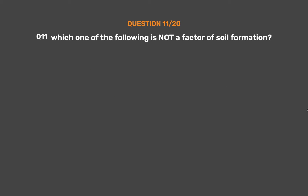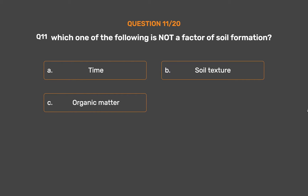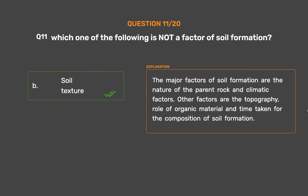Question No. 11. Which one of the following is not a factor of soil formation? Option A: Time. Option B: Soil texture. Option C: Organic matter. Option D: Mulching. The correct answer is Option B: Soil texture. The major factors of soil formation are the nature of the parent rock and climatic factors. Other factors are topography, role of organic material, and time taken for the composition of soil formation.